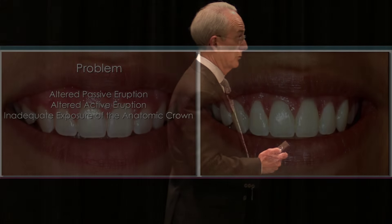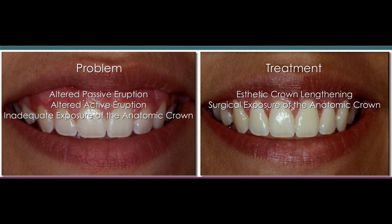The treatment is to remove this excess tissue exposing the crown — that's called aesthetic crown lengthening. I really prefer the term surgical exposure of the anatomic crown and will use that when explaining this procedure to patients because it makes more sense to them. If we're going to have an idea of what to expect, we need to know something about tooth form and tooth anatomy, etiology, and what causes this problem.